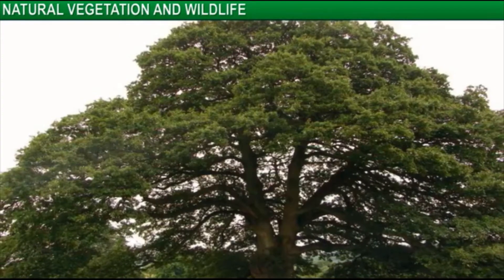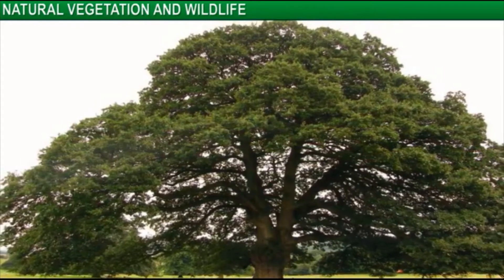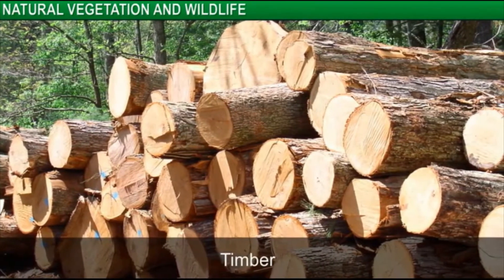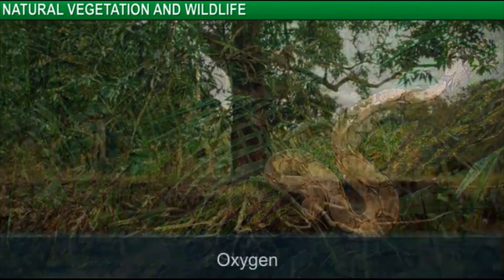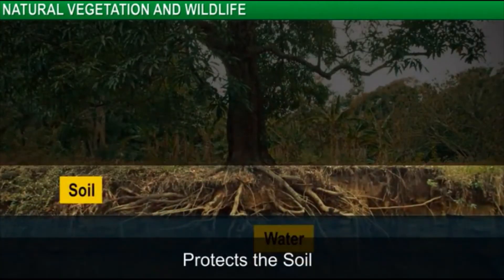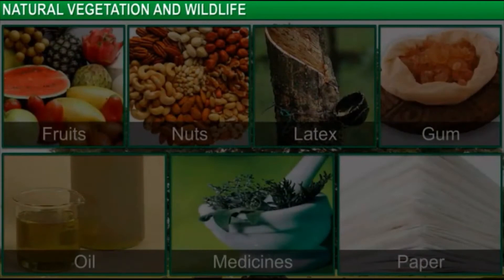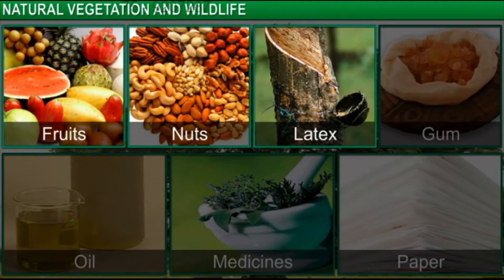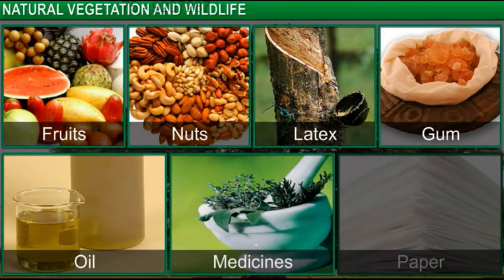The plant life of a region is an important natural resource. Plants and trees provide timber for human use, shelter to animals, oxygen for us to breathe, protection to the soil, storage for underground water, and various articles such as fruits, nuts, latex, gum, oil, medicine, and paper.